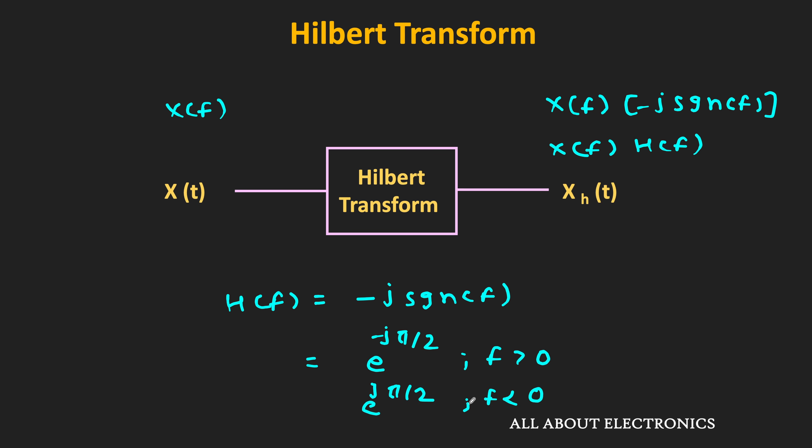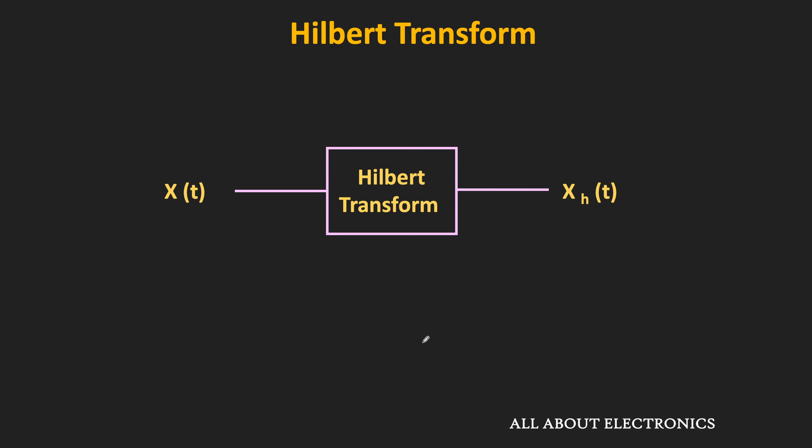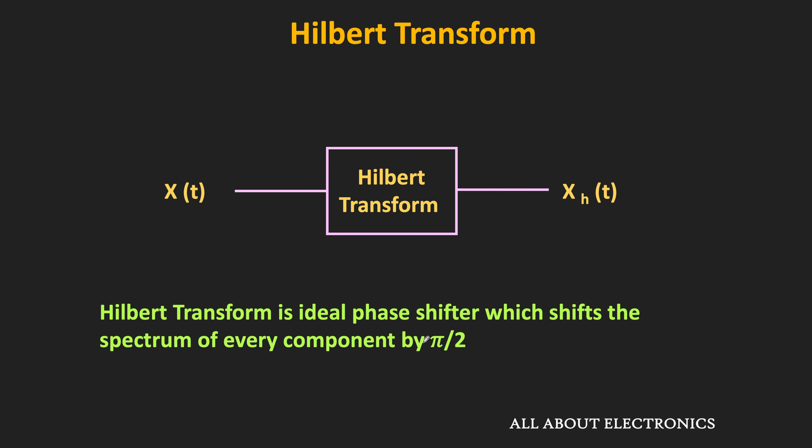From the circuit perspective, the Hilbert transform circuit provides a −π/2 phase shift to each spectral component. So we can say the Hilbert transform is an ideal phase shifter which shifts the spectrum of every component by −π/2.